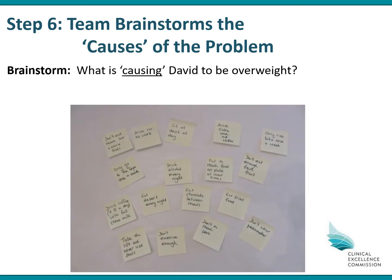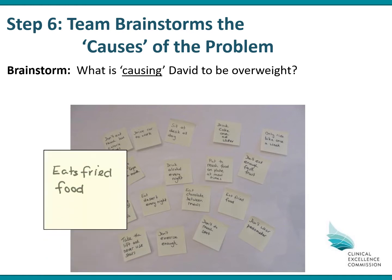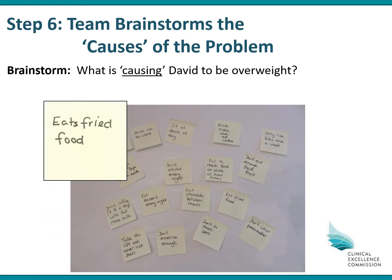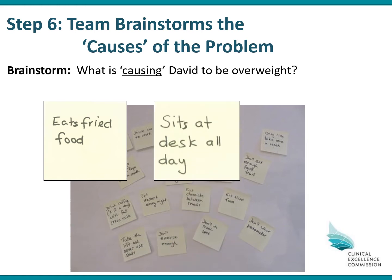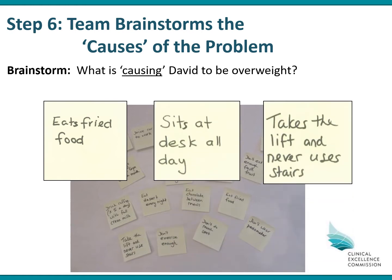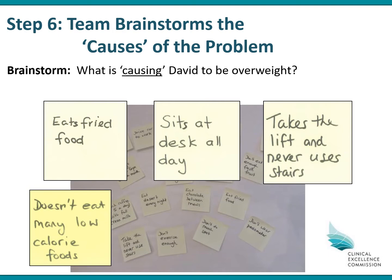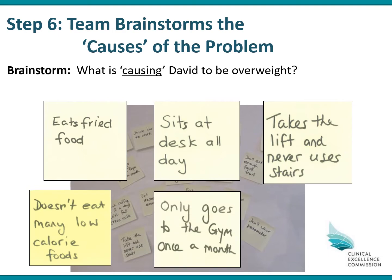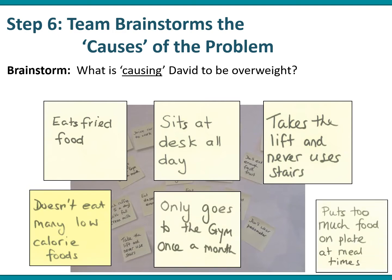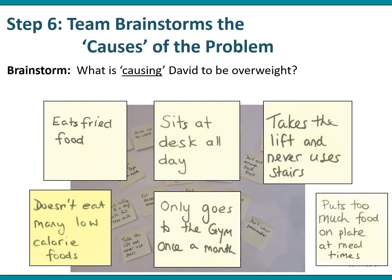With David, we brainstormed all the causes of why he is overweight and put all our post-it notes onto a flat piece of paper. Some of the causes are: he eats fried food, he sits at his desk all day, he takes the lift and never uses the stairs, he doesn't eat many low calorie foods, he only goes to the gym once a month, and he puts too much food on his plate at meal times.